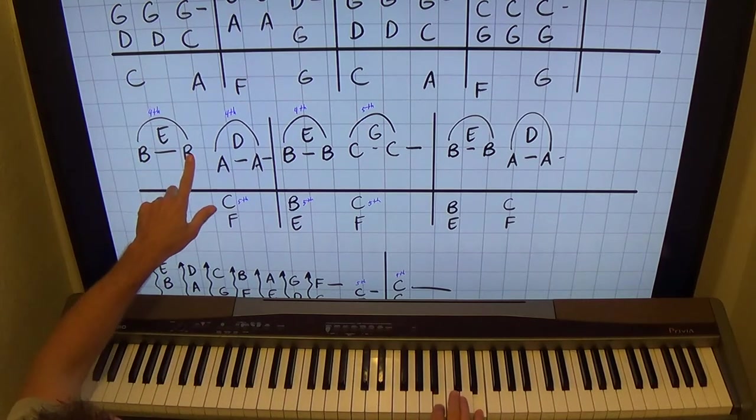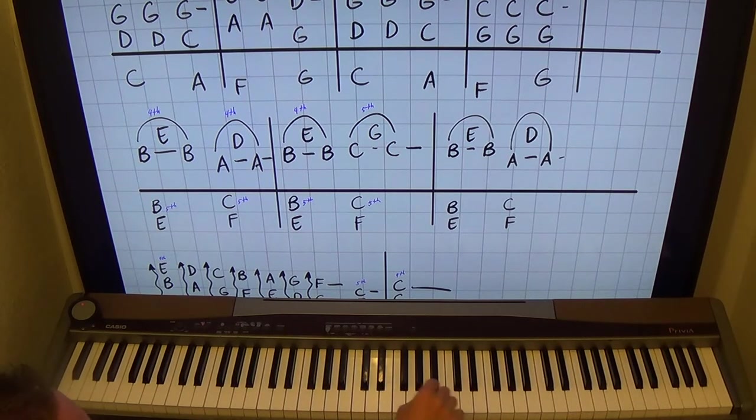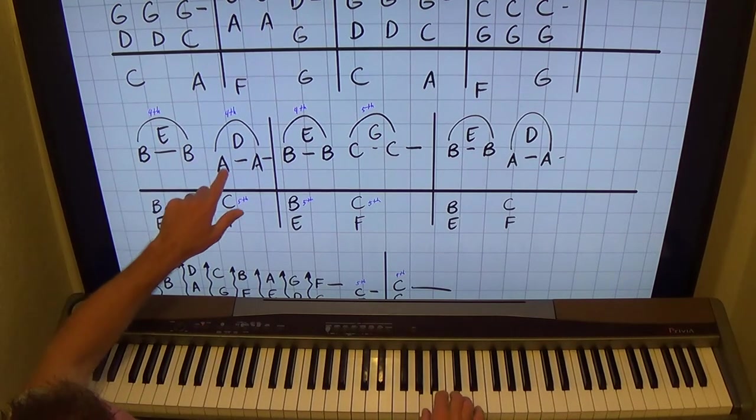So B-E-B, measure that, that's a fourth. One, two, three, four. B-C-D-E. And then you move down to A-D-A. So B-E-B, A-D-A, and back to B-E-B, C-G-C. Now that's a fifth, right?